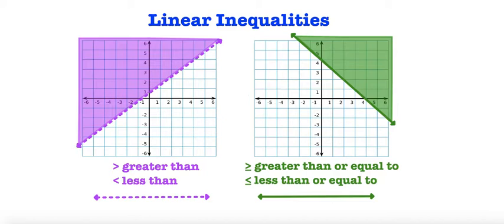This is very important because if we're looking at a graph, we need to know if these points are included or not included. If it's a dashed line, the coordinates are not included, but if it's a solid line, then these points are included as part of the solution.